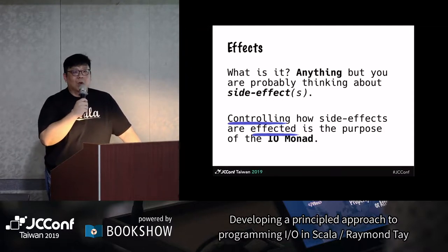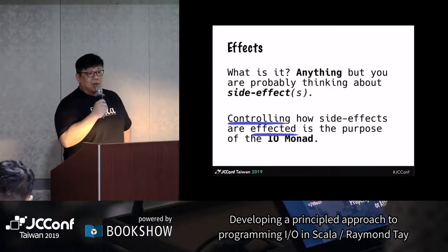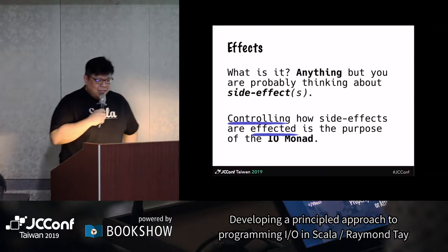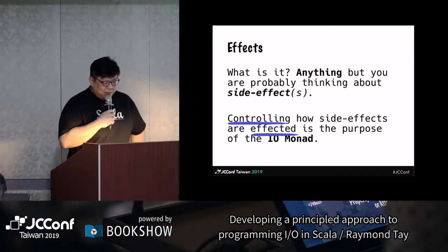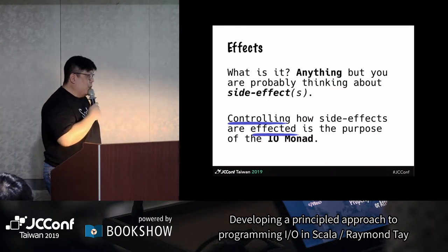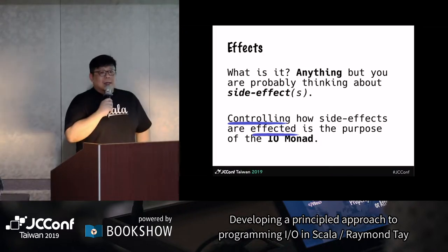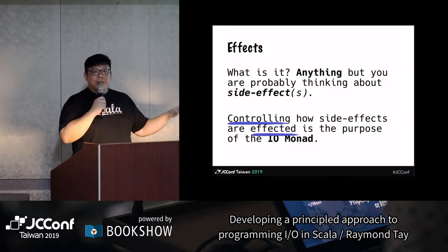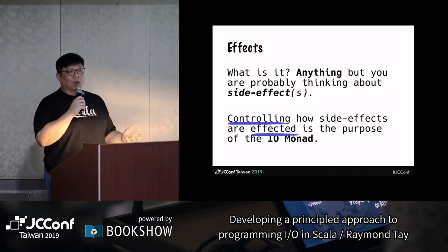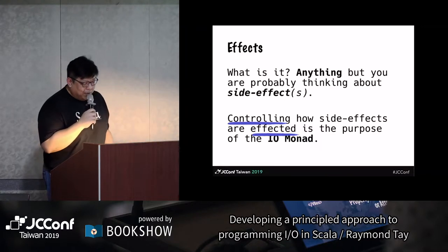Most times what you're really thinking about is side effects. Side effects can literally mean anything. The IO monad in Scala, at least in my experience, is really about controlling how these effects can be effected. The control basically means the separation of concerns — you describe the computation, but that doesn't mean you want to execute it right then and there when you describe it. That's a critical thing to understand.